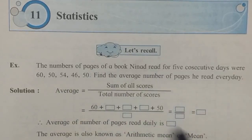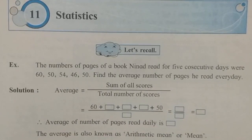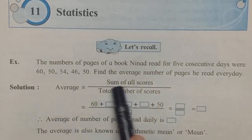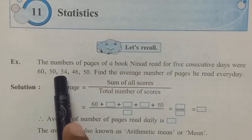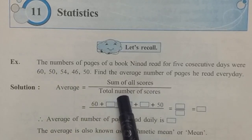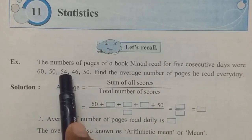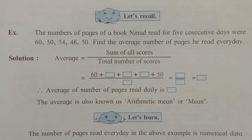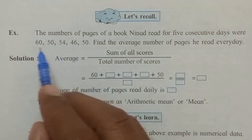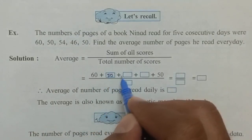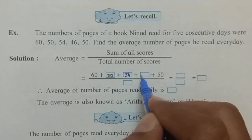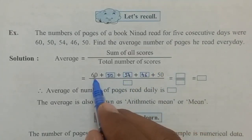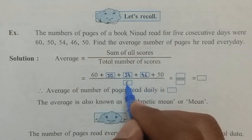We have learned this type of example in lower classes - it is called finding the average. Average is equal to the sum of all scores — so 60 plus 50 plus 54 plus 46 plus 50 — divided by the total number of scores, which is 5.